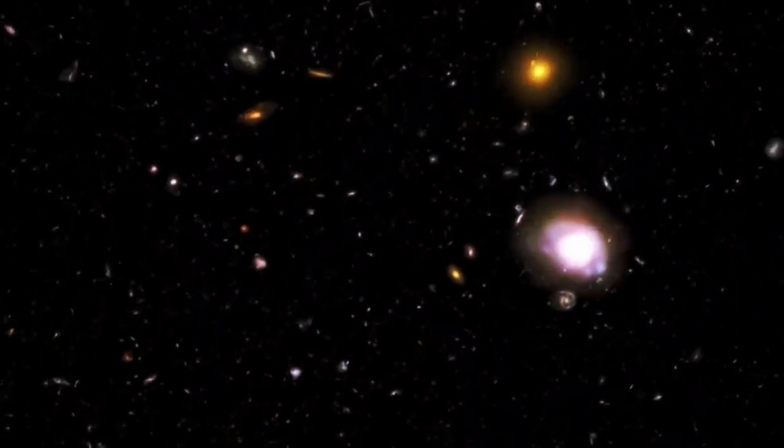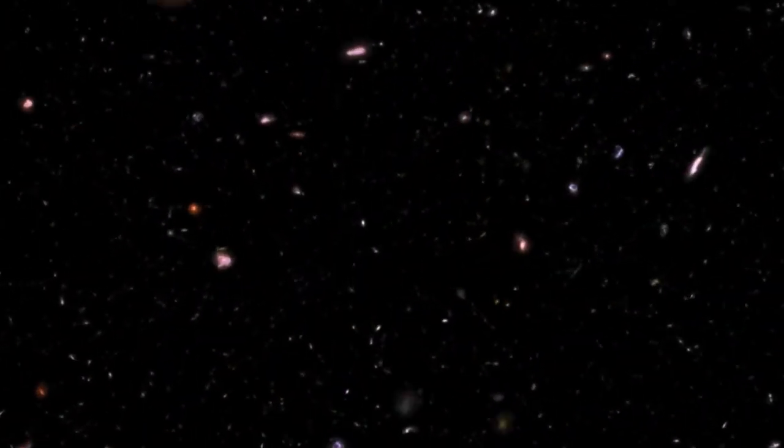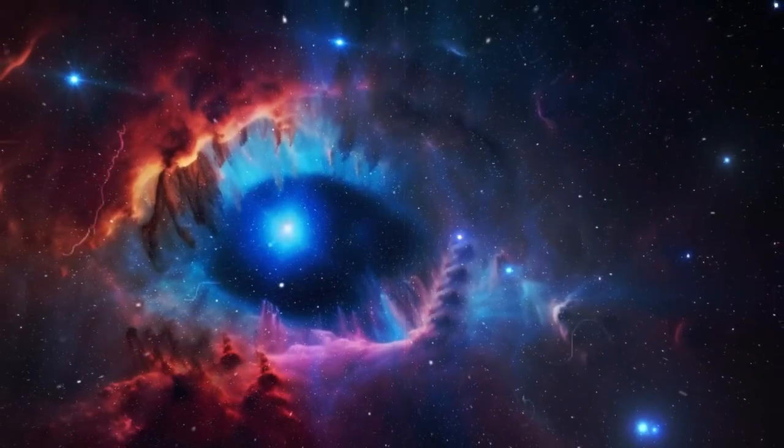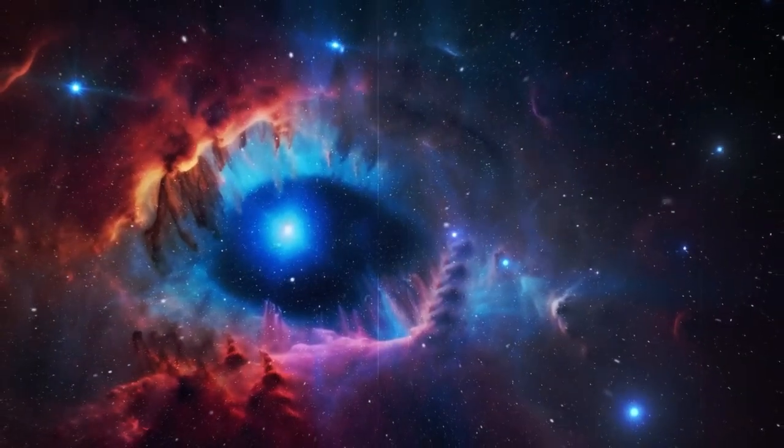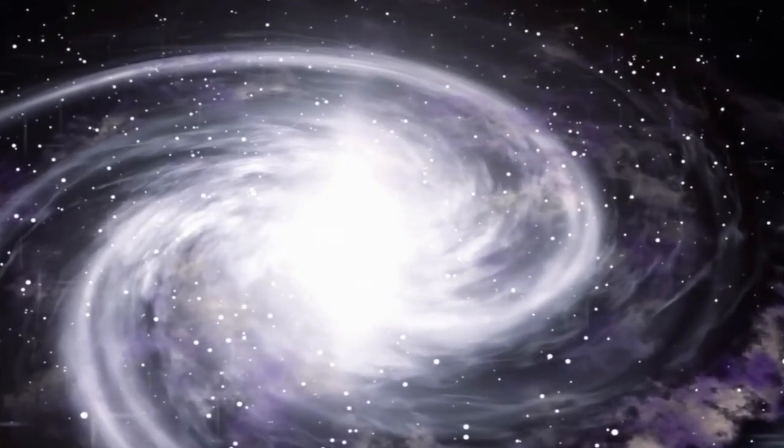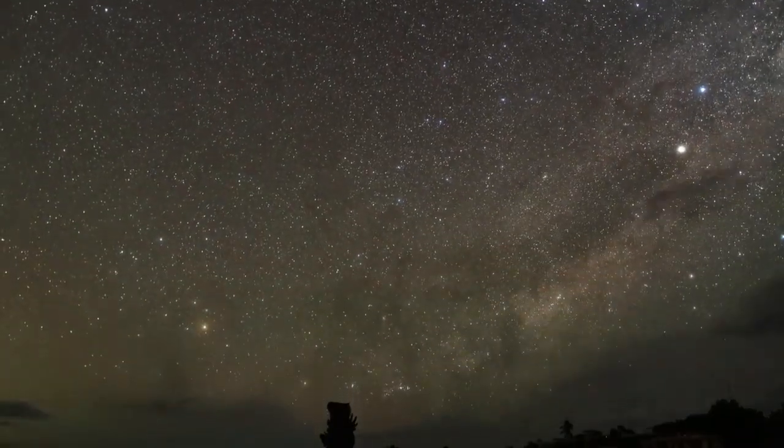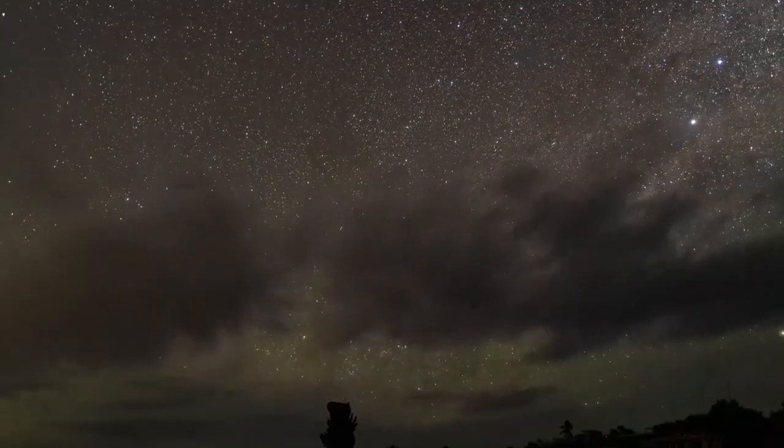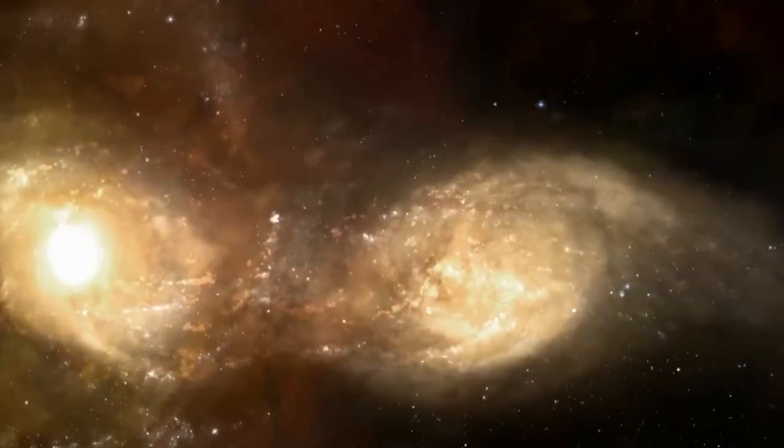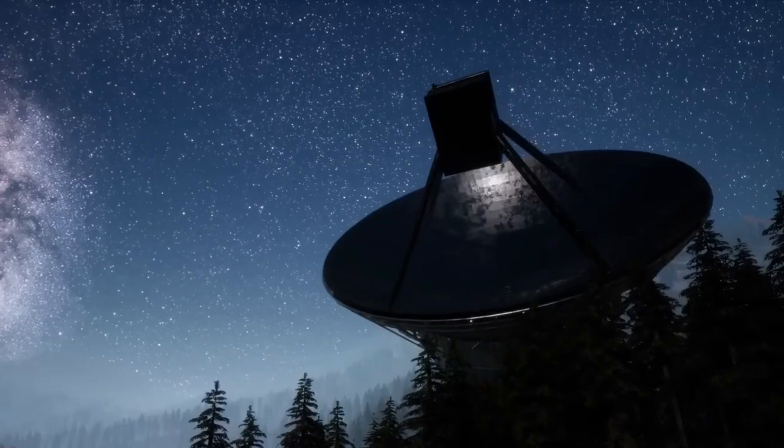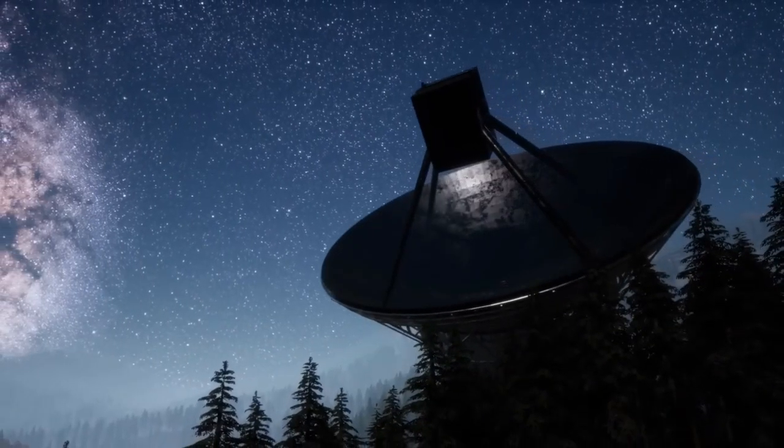Webb has revealed unexpected structures within these voids. Subtle filaments of matter and unusual distributions of galaxies along their edges that don't match standard predictions. These patterns suggest something fundamentally different happens in these regions compared to denser clusters. As light traverses these expansive voids, its journey subtly shifts, mirroring the variable pace of time itself.